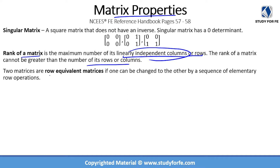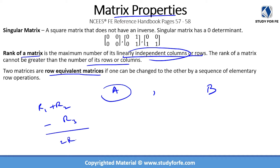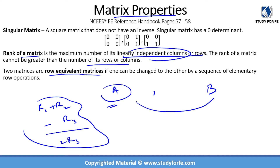Two matrices are considered row equivalent if one can be converted into the other by performing row operations. So if I have matrices A and B, and I can add row one and row two, subtract from row three, multiply row three by two, and so on — these are all row operations — and I can transform matrix A into matrix B through these operations, then A and B are considered row equivalent matrices. They are not equal matrices but they are row equivalent because I can change one into the other by performing row operations.